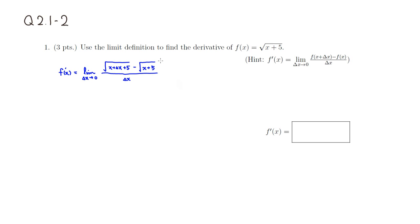Then there's a trick that we need to use. We need to multiply top and bottom by almost like the numerator except for the sign. So you have the square root of x + Δx + 5.